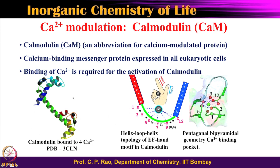Looking at the calmodulin structure, you have calcium binding centers here and there. Opening up this region, you see one helix, another helix — red helix, blue helix — and a green loop. In this loop, counting 1, 2, 3, 4, 5, 6, 7 coordinations are directed towards the calcium — it is a 7-coordinated calcium in the loop region. Calcium here is in the center in a pentagonal bipyramidal arrangement: five in one plane and two in the other.